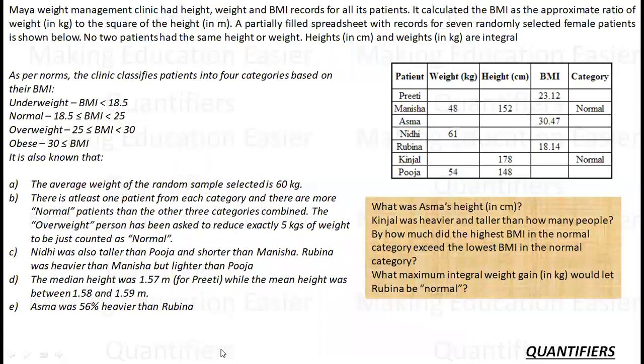Maya Weight Clinic had height, weight and BMI record of all its patients. It calculates BMI as the approximate ratio of the weight and the square of the height. A partially filled spreadsheet along with 7 randomly selected female patients is shown below. How is the BMI calculated? BMI is weight upon height square.